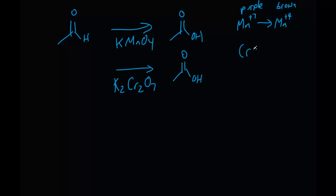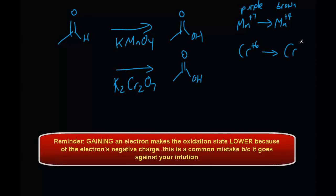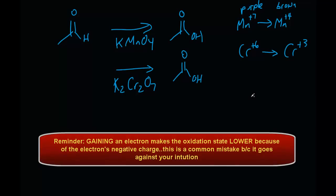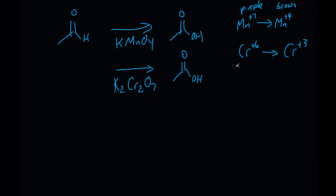But similarly, chromium is going to have a plus 6 charge, or oxidation state, and then it's going to be reduced to plus 3. And that's going to go from an orange to a green color, so that you can clearly see oxidation going on.